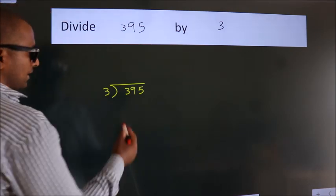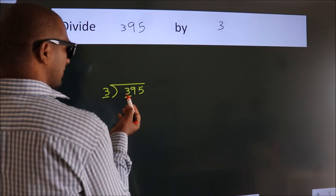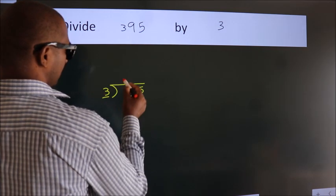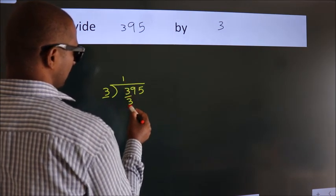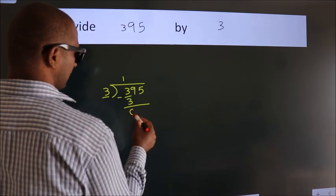Next, here we have 3, here 3. When do we get 3? In the 3 table, 3 times 1 is 3. Now we should subtract. We get 0.